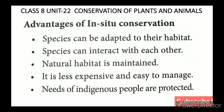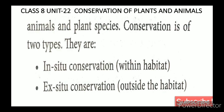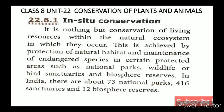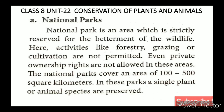In summary, In-Situ Conservation means conserving plants and animals within their natural living place. There are three types: national parks, sanctuaries, and biosphere reserves. These are the advantages of in-situ conservation. In the next video, we will cover Ex-Situ Conservation. Thank you, students.